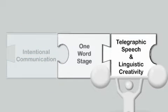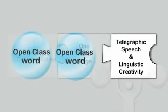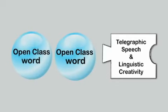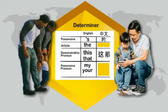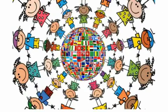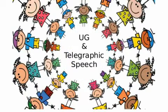UG provides a strong account of telegraphic speech. In telegraphic speech, toddlers attempt to combine open class words into phrases and sentences. UG does not specify the exact list of closed class words and morphemes that must appear in the syntax of a given language. And so, children must learn the closed class specific to their language during the period of telegraphic speech. Because of this lack of specification, UG predicts that there will be telegraphic speech in the learning of all languages.